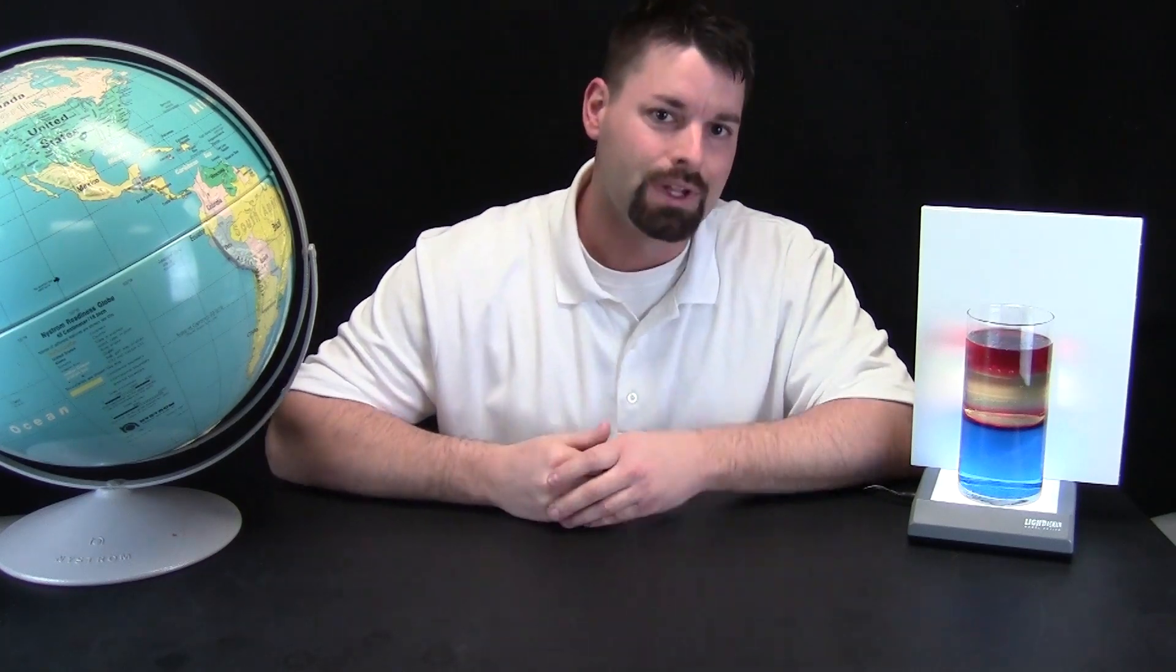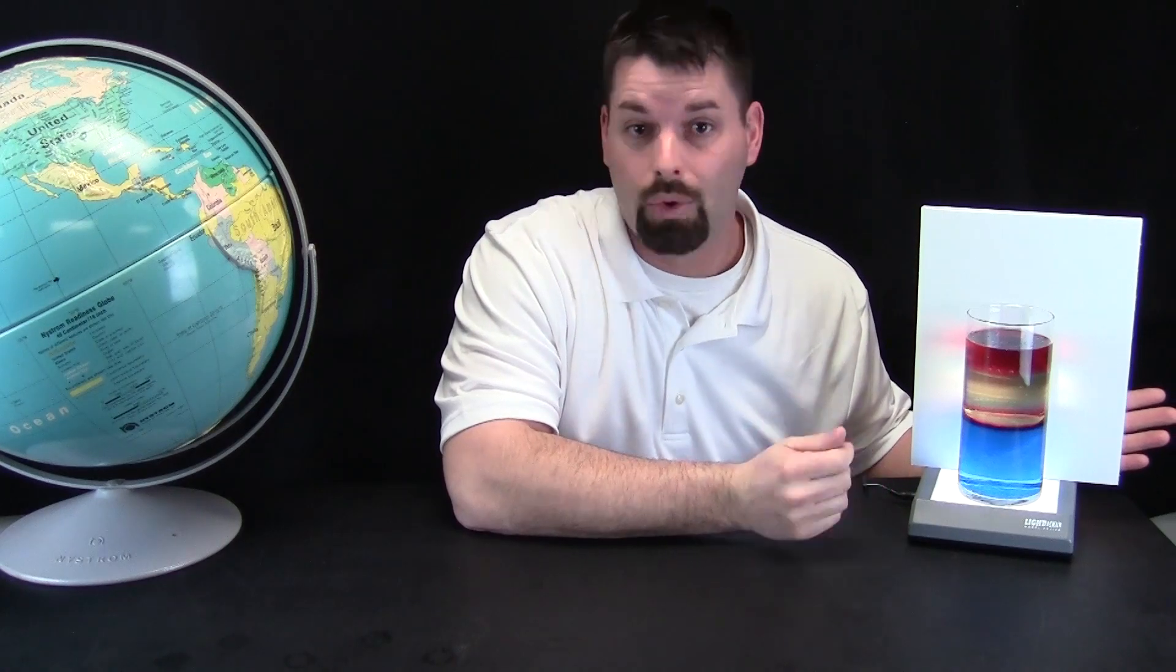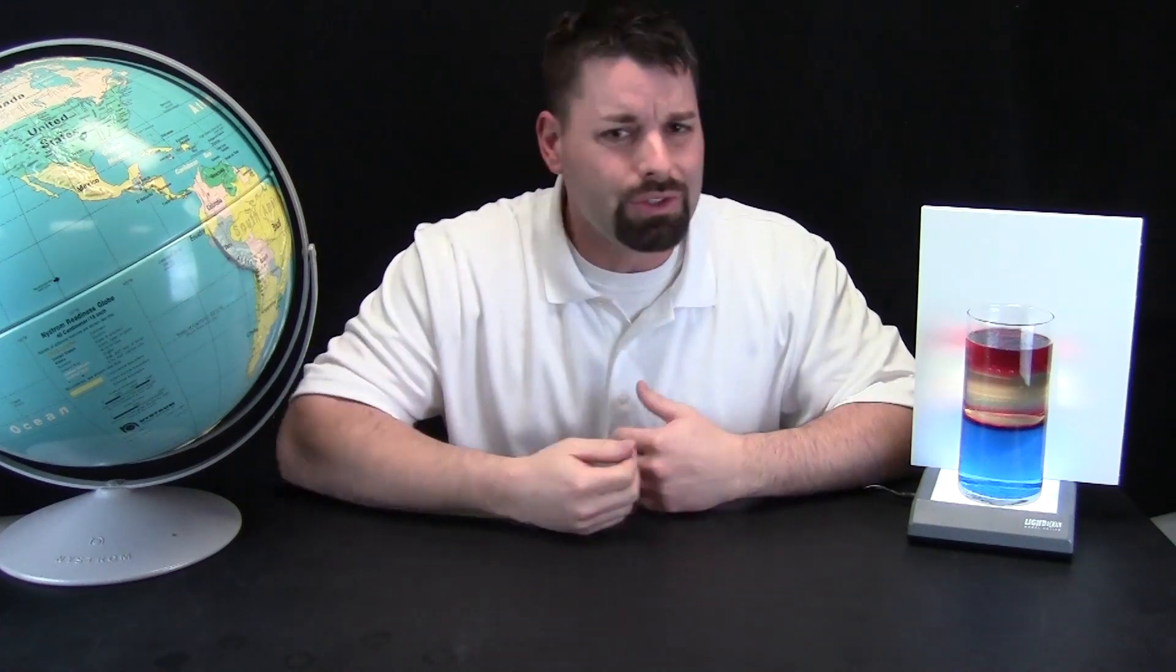For example, look at the three liquid layers in this glass container. What are they made of? Why did they separate? What happens if we add other things?